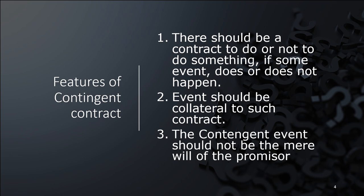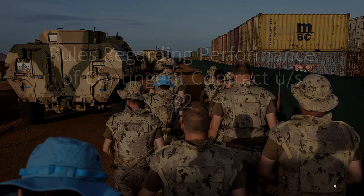To summarize the elements: there should be a contract to do or not to do something if some event does or does not happen; the event should be collateral to the contract; and the contingent event should not be the mere will of the promisor. If it is within my control and I'm promising to do it, then I control the entire event — it should not be in my hands. That is what the third requirement is trying to say.